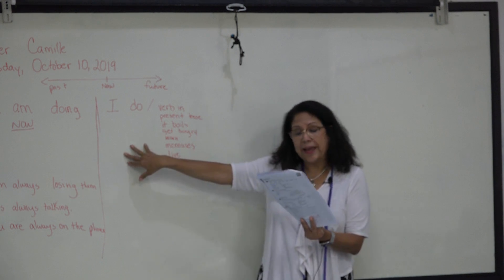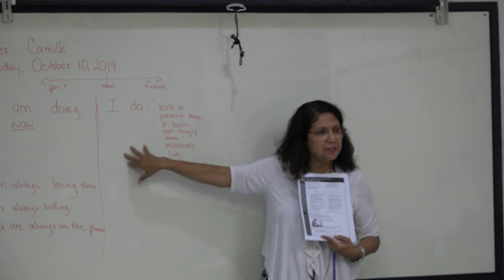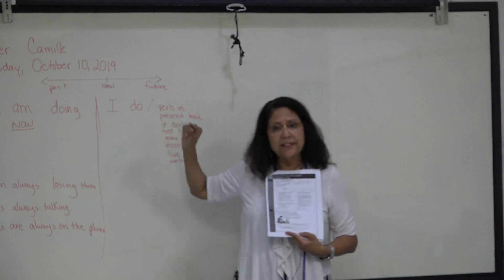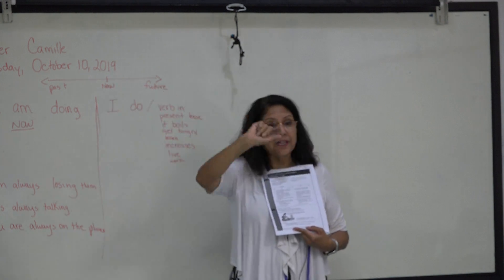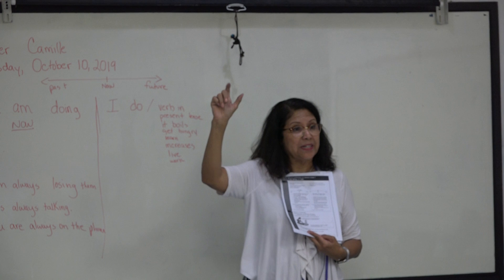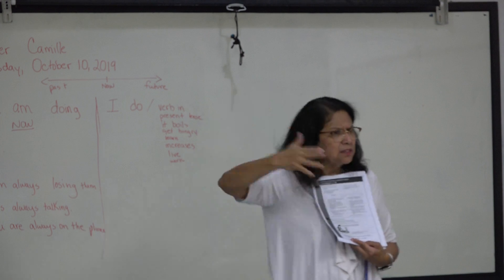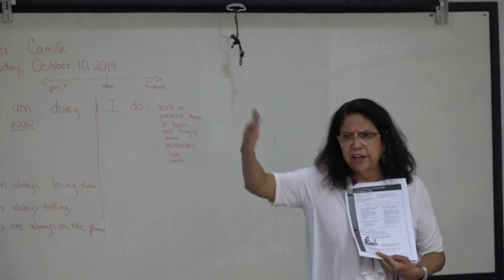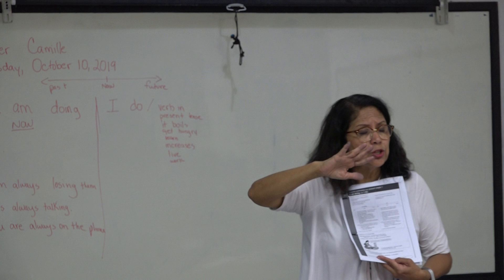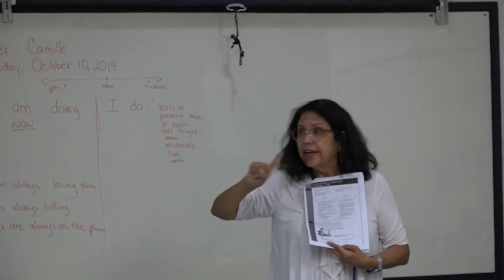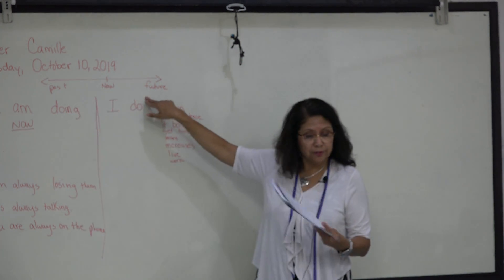It doesn't rain very much in summer. It doesn't rain — not 'it doesn't raining.' It doesn't rain, because it rains a lot. It rains yesterday, it rains tomorrow. So rain has no past, now, and future.